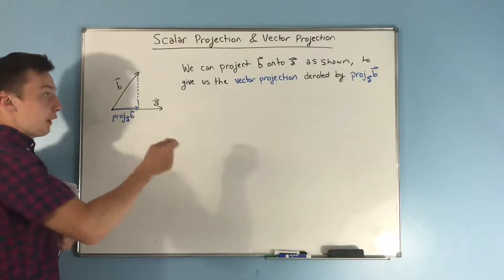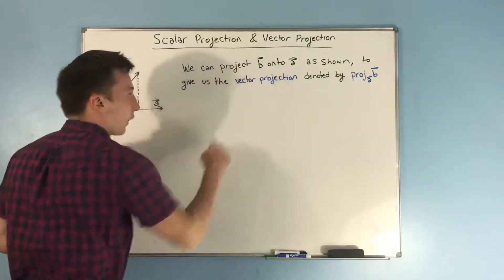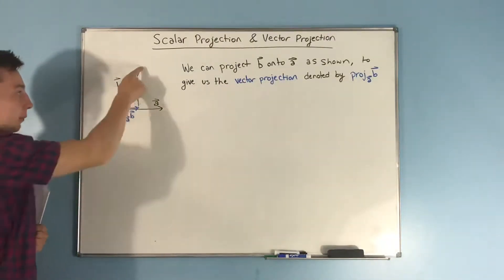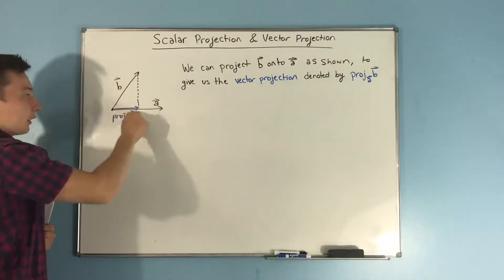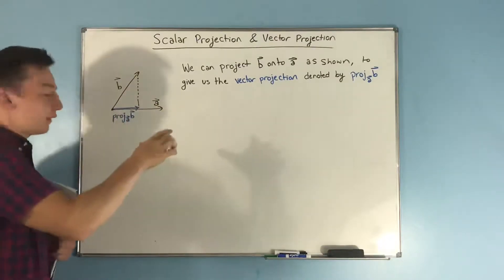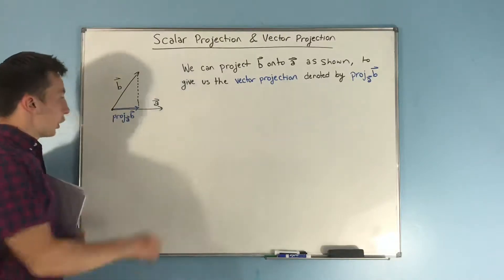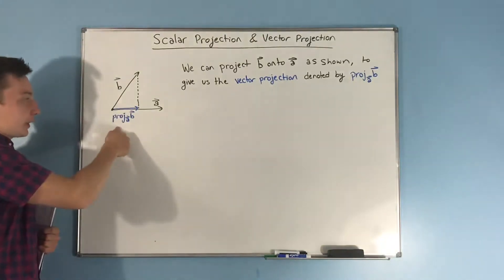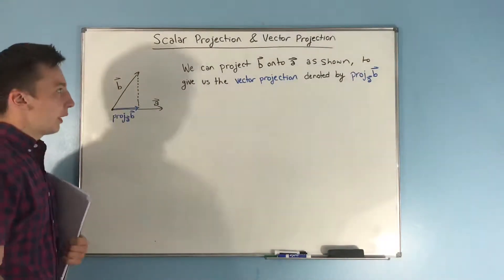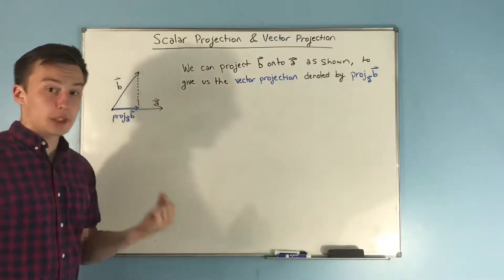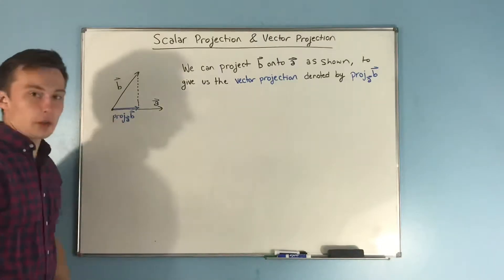As far as what is the vector projection, basically it starts out like this. If we project vector B onto vector A as shown — so you see I have vector B here, vector A here — and I projected vector B onto vector A by basically, you can think of it as B casting its shadow on A. So then you get this blue vector here, the projection, it's called the projection of B onto A. That right there is the vector projection. You can think of it in this scenario as the x component of B.